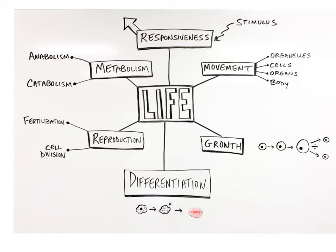The sixth and final life process is reproduction, which is the formation of new cells through cell division during tissue growth, replacement, or repair. It can also refer to the formation of a new individual human being as a result of fertilization between a sperm and an egg cell. If any of these life processes stops occurring, the result is cell and tissue death, which can lead to the overall death of the individual.